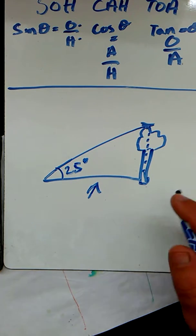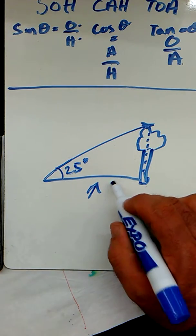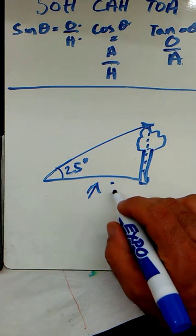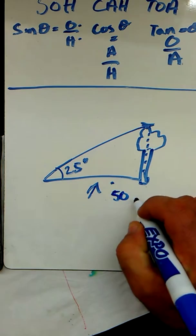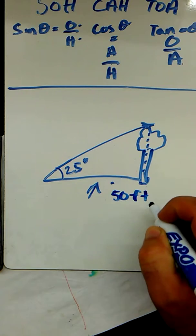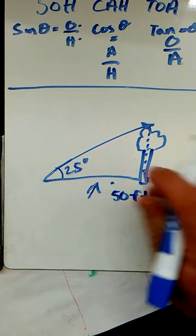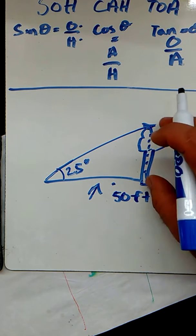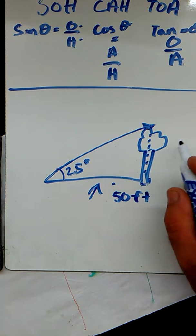So the adjacent side is what we can figure out just by walking it off or taking a measurement. We'll call this 50 feet. The hypotenuse side might be hard to measure unless you have a string. But the side that we're looking for is the opposite side.